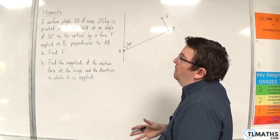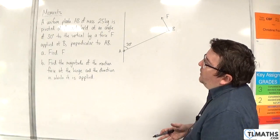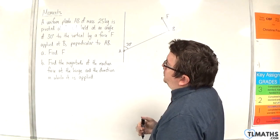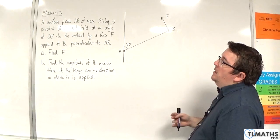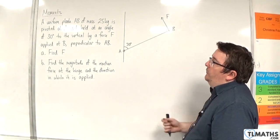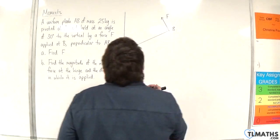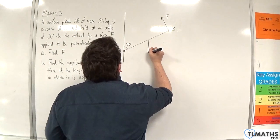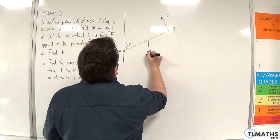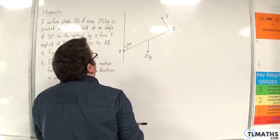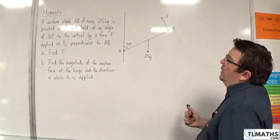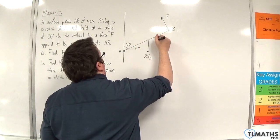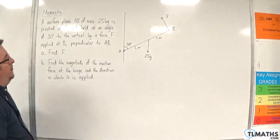Let's read through the problem. We've got a uniform plank AB of mass 25 kilos pivoted at A and held at an angle of 30 degrees to the vertical by a force F applied at B perpendicular to AB. Part A, find F. First of all, because the plank is uniform, the weight must act through the center of the rod, so that would be 25g. We don't know the length of the rod, so we'll call that length L meters and that length L meters.